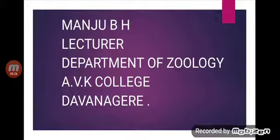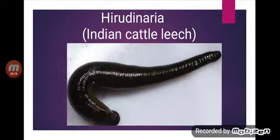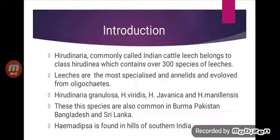Hirudinaria, commonly called the Indian cattle leech, belongs to the class Hirudinaria, which contains over 300 species of leeches. Leeches are the most specialized annelids and have evolved from the oligochaetes. The most common Indian species are Hirudinaria granulosa, Hirudinaria viridis, Hirudinaria javanica, and Hirudinaria malanica. These species are also common in Burma, Pakistan, Bangladesh, and Sri Lanka.